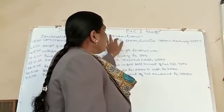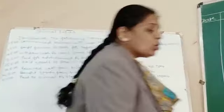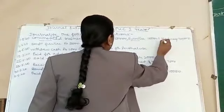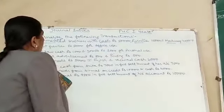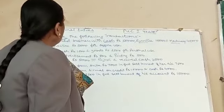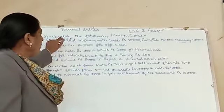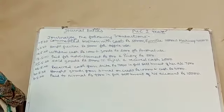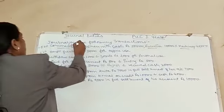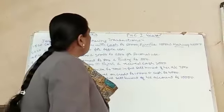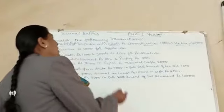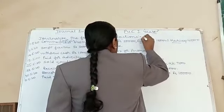Come and see: commence business with cash, furniture, and machinery. First you will have to see what are the things involved. Whenever you commence the business, we are in the capital. Capital is a liability, and whenever there is an introduction of the business, the capital is increasing. Increase in the capital is credit. Cash, furniture, and machinery are all assets. When you are investing in them, increase in the asset is debit.